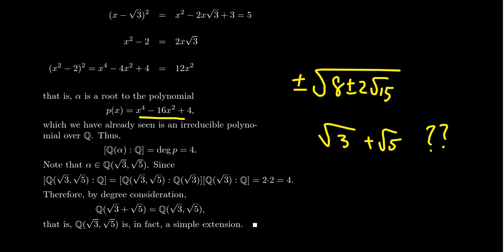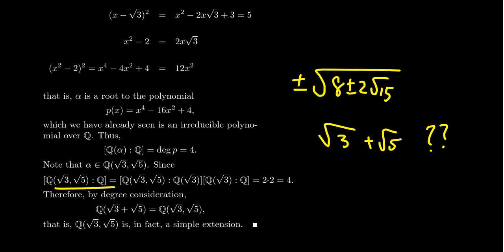Clearly, α belongs to the field Q(√3, √5), because √3 and √5 add together to give α. So α belongs to that field. This field extension Q(√3, √5) over Q factors as: [Q(√3,√5) : Q(√3)] · [Q(√3) : Q]. The extension Q(√3) over Q is clearly degree two, since this is a simple extension with irreducible polynomial x² − 3.